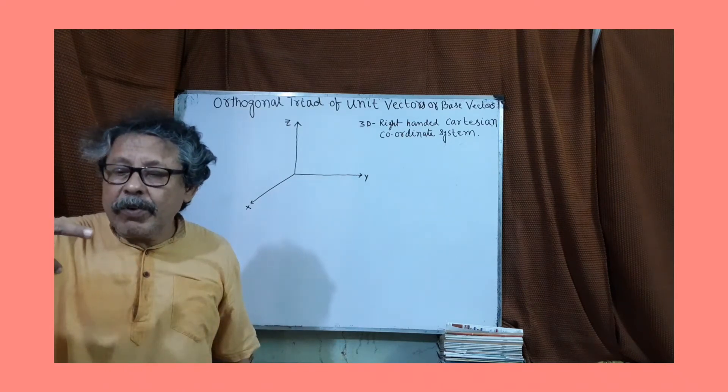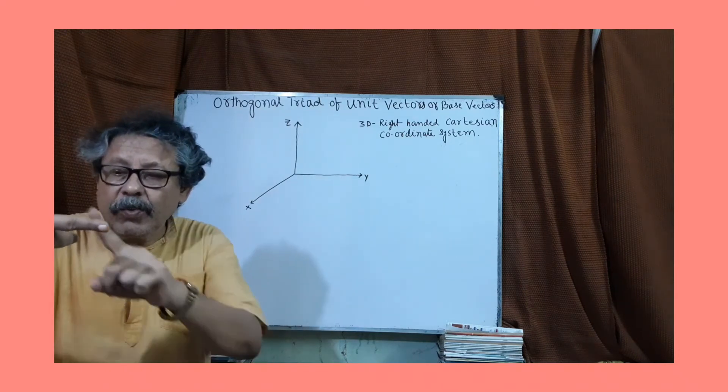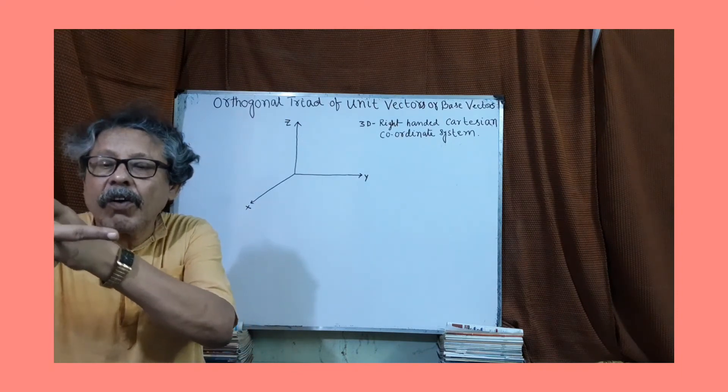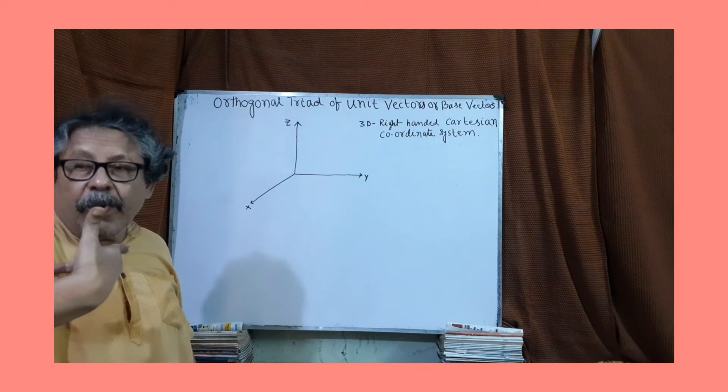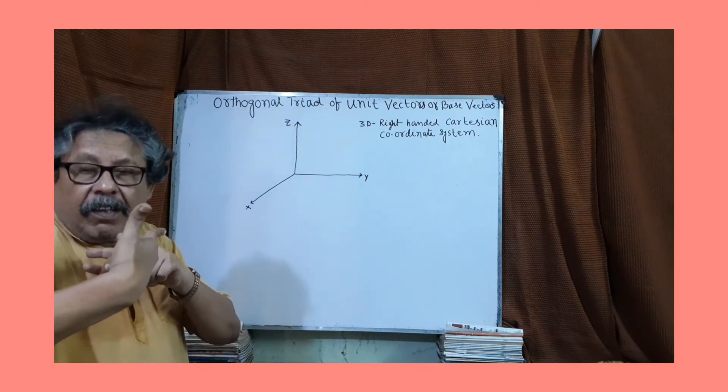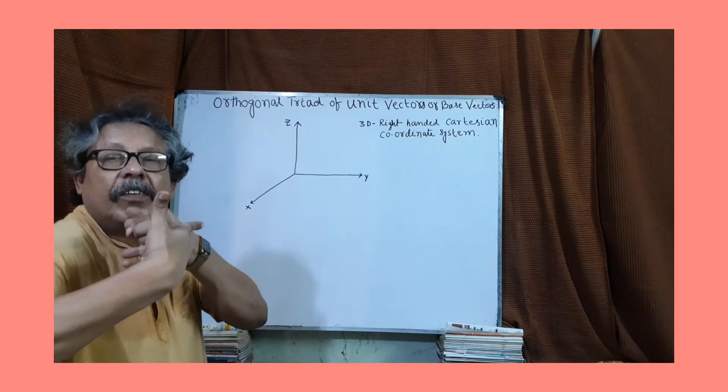Now suppose I am rotating in this way. So this is x, this is y, this is z. Or I can write in this way - x, y, and z.